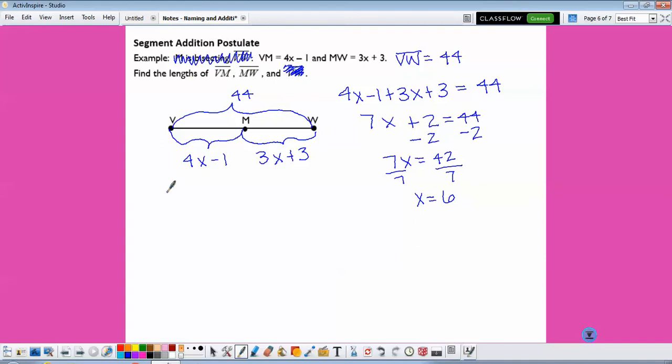But it wants me to find the length of MV and the length of MW, so I need to take the 6 and plug it back in for X. 4 times 6 is 24 minus 1 is 23. 3 times 6 is 18 plus 3 is 21. And to double check, 23 plus 21 gives us our 44 total that we had at the beginning.